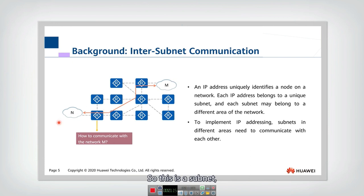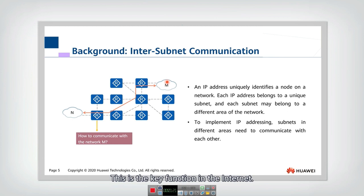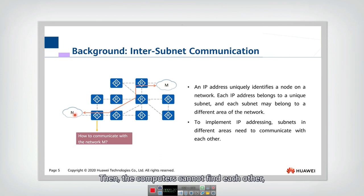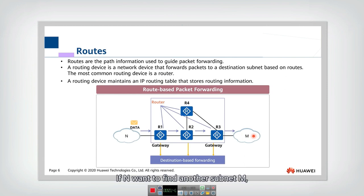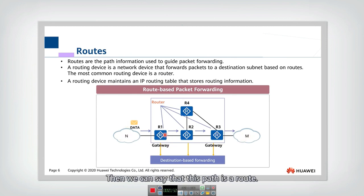This is a subnet, and this is another subnet — how to do inter-subnet communication. This is the key function of the internet. If we cannot do inter-subnet communication, then computers cannot find each other when they are not in the same subnet. So first, let's introduce what routes are. Routes means the path the packet goes along. If subnet N wants to find another subnet M, and the packet goes along a certain path, then we call that path a route. It is the path information used to guide packet forwarding.